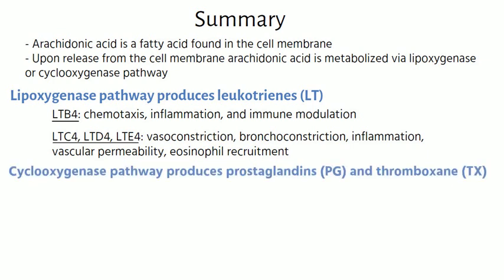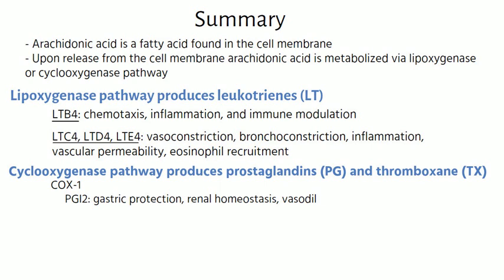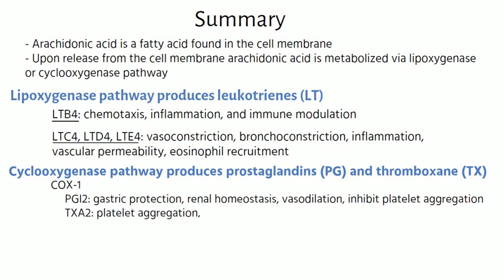The cyclooxygenase pathway produces prostaglandins and thromboxane. The products of the COX-1 pathway are prostacyclin, which plays a role in gastric protection, renal homeostasis, vasodilation, and inhibition of platelet aggregation, and thromboxane, which promotes platelet aggregation and vasoconstriction.